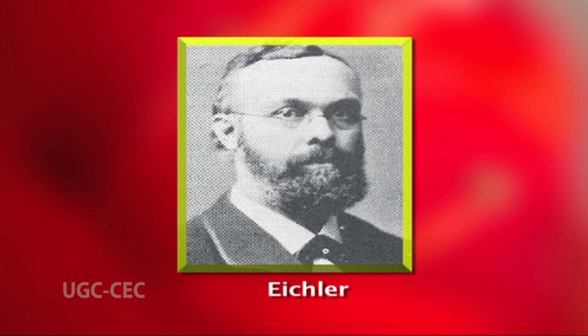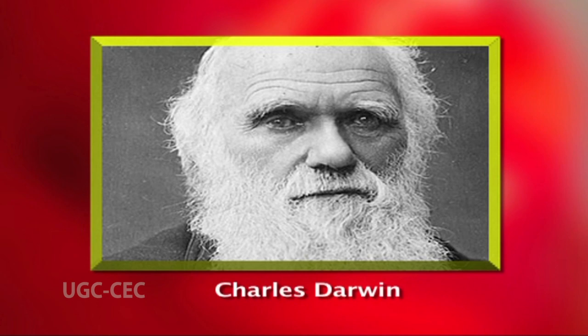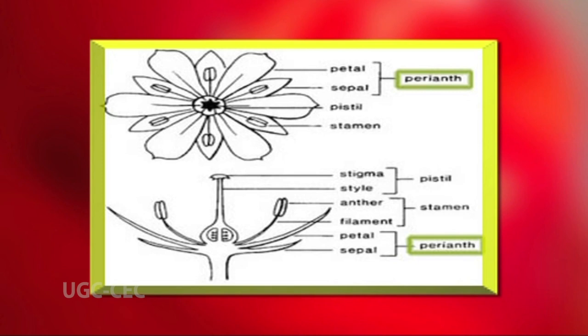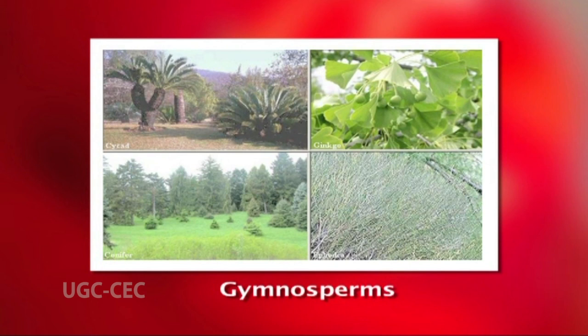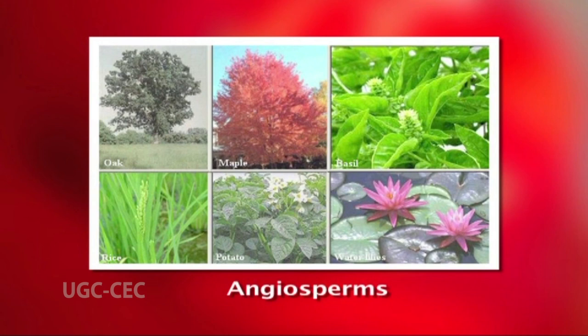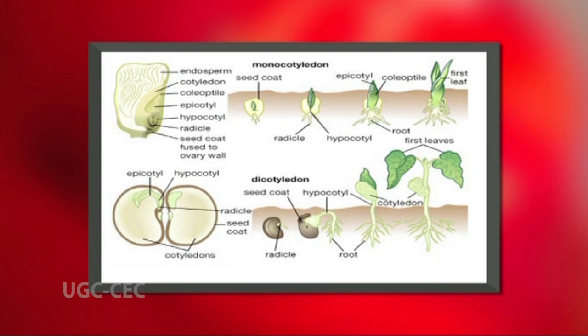Now the salient features of the classification: this system is based on Eichler's system, who was the first person to propose an evolutionary system of classification. It is an evolutionary system proposed subsequent to the acceptance of Darwin's theory of evolution, based on the assumption that flowering plants where the perianth is absent are evolutionarily primitive. The gymnosperms are considered more primitive and hence were placed before angiosperms.